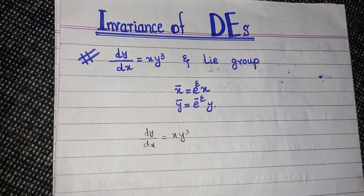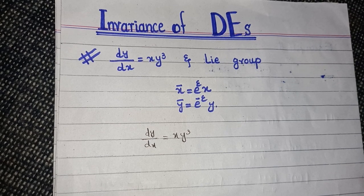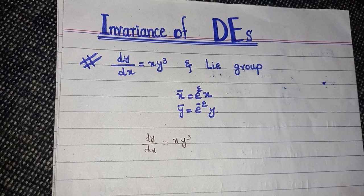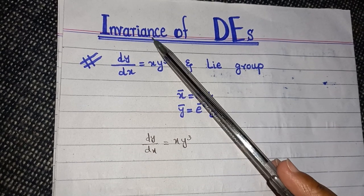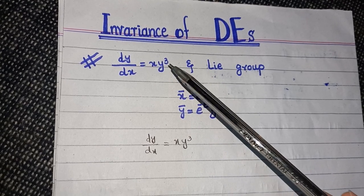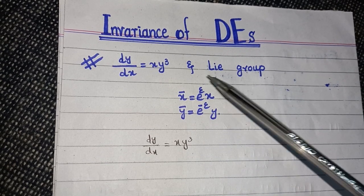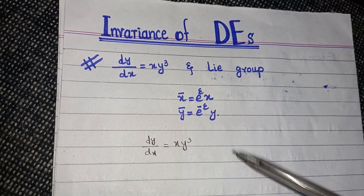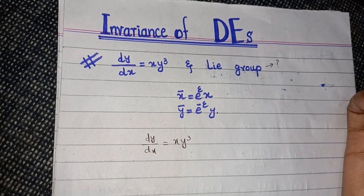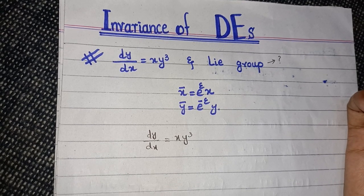In today's lecture we will talk about the invariance of differential equations. First of all, you should keep in mind the meaning of the word invariance: if you substitute some sort of transformation in your original differential equation, then its form remains unchanged. We are given a Lie group — if you don't know what a Lie group is or its examples, you can check my previous videos where I have explained it in detail.